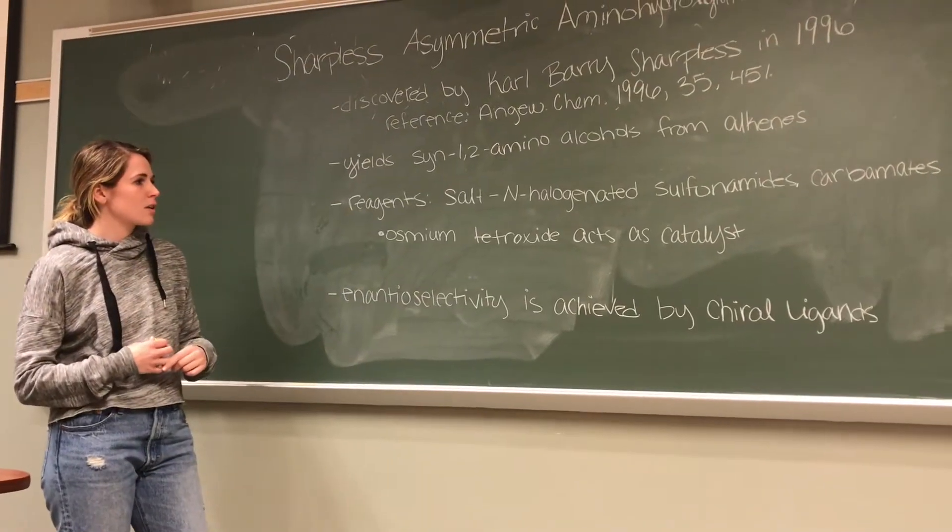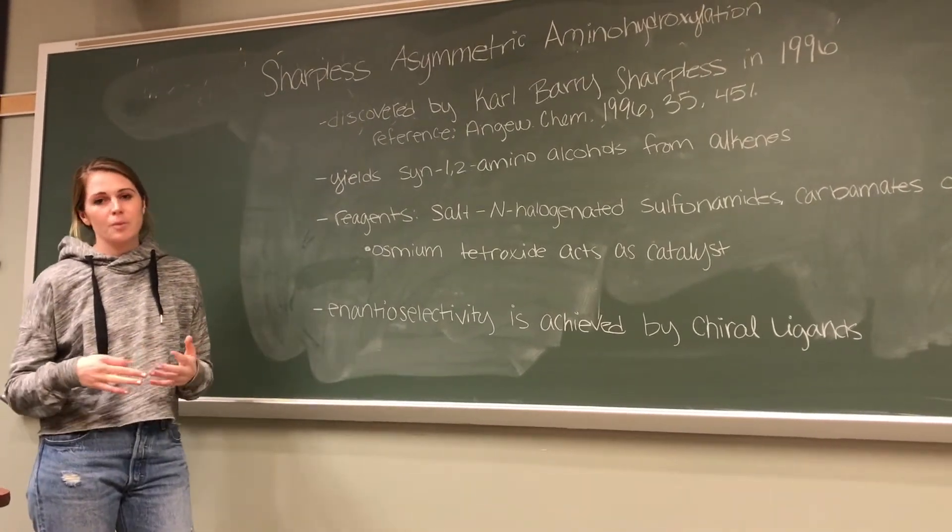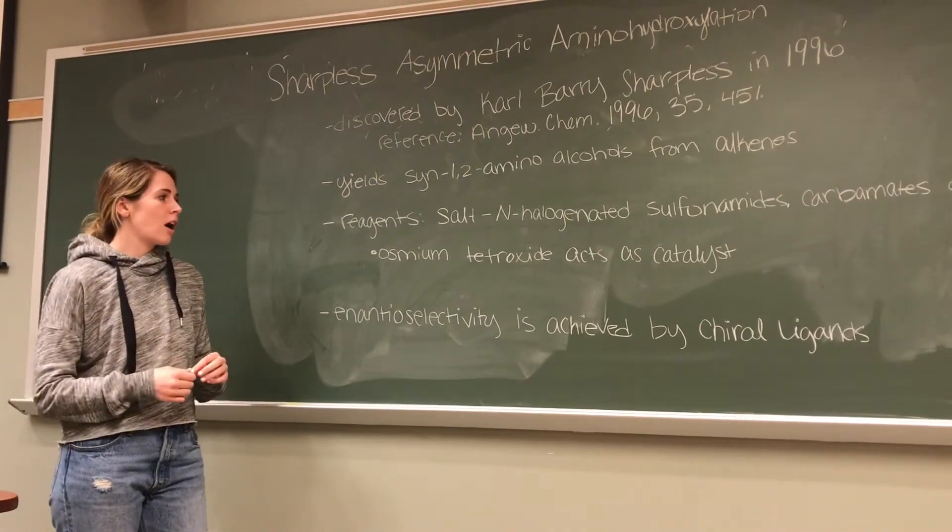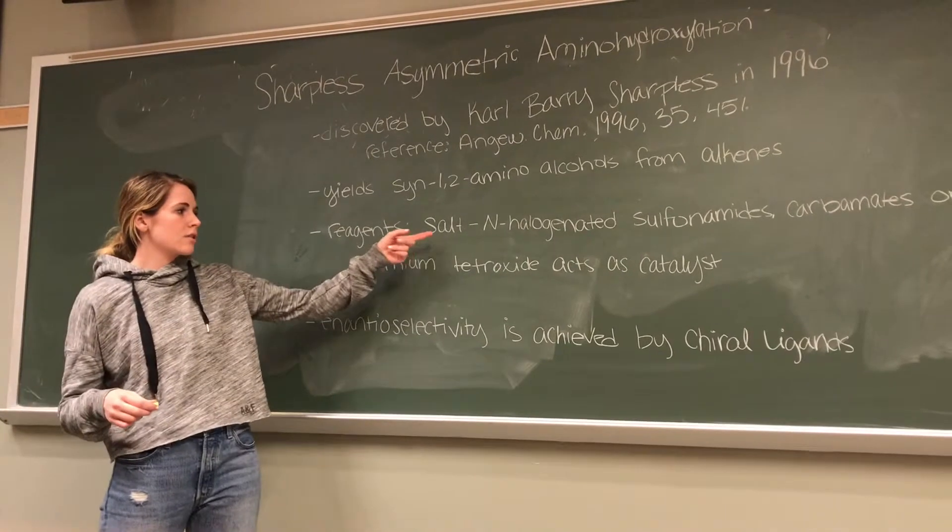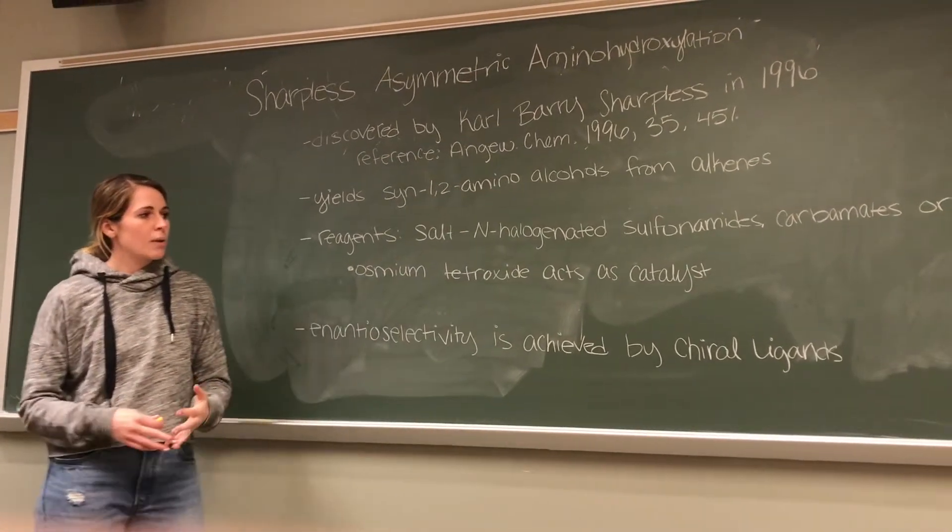So in this reaction, our starting materials are alkenes, and we have an alcohol group and an amine added syn with each other to that alkene. Common reagents used in this reaction are salts, and the source of salt is usually a nitrogen halogenated, either sulfonamide, carbamate, or amine.